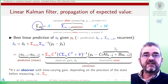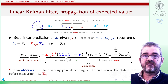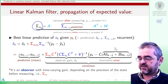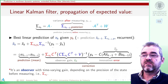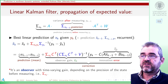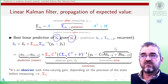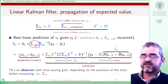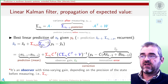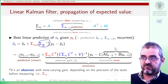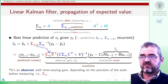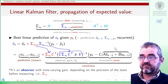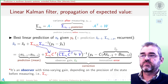This sigma x_k is the estimated variance before measuring y_k, and then the best linear prediction of the state given a measurement is the standard formula: covariance times the inverse of the variance of the information I have, which is the sensor. This is the covariance; this is the variance of the measurement before actually observing it.